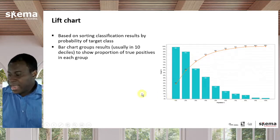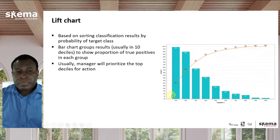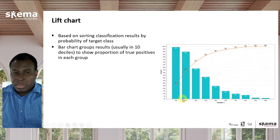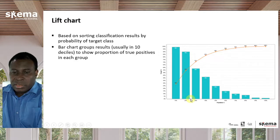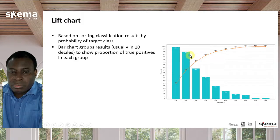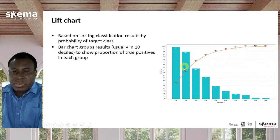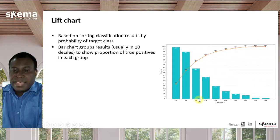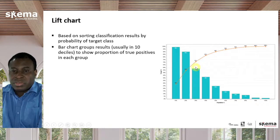The next 20% of the data had almost 90% true positives, covering 54% of all true positives in the dataset. Then the next 30% was only around 58% true positives, covering 71% of the dataset.